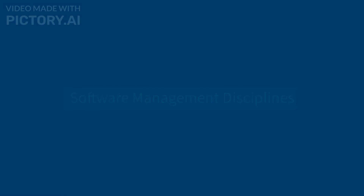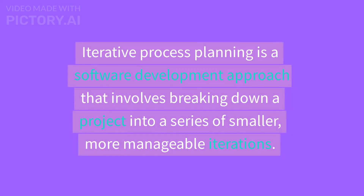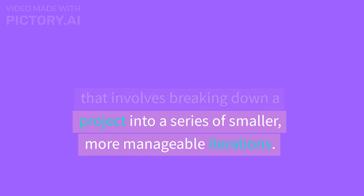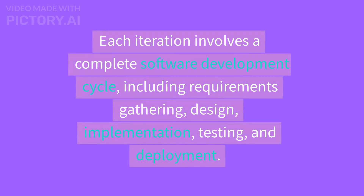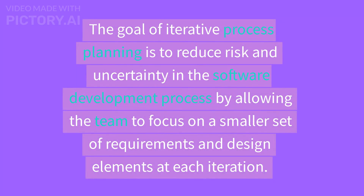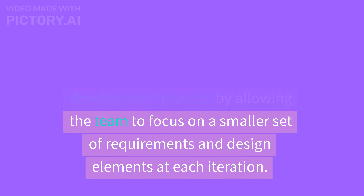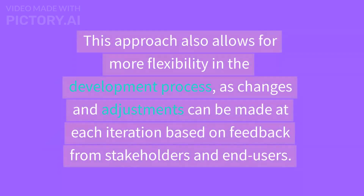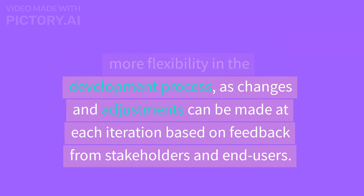Software Management Disciplines: Iterative Process Planning. Iterative Process Planning is a software development approach that involves breaking down a project into a series of smaller, more manageable iterations. Each iteration involves a complete software development cycle, including requirements gathering, design, implementation, testing, and deployment. The goal is to reduce risk and uncertainty by allowing the team to focus on a smaller set of requirements at each iteration. This approach also allows for more flexibility, as changes can be made based on feedback from stakeholders and end-users.